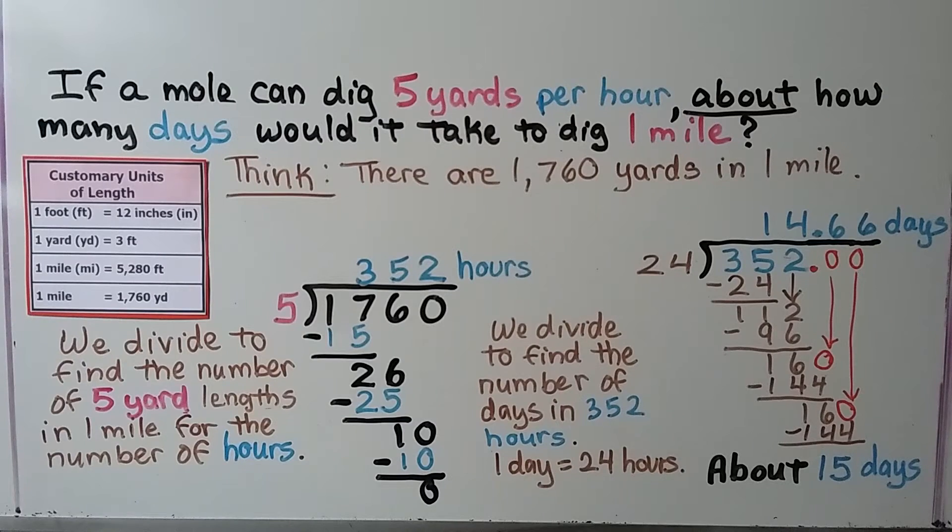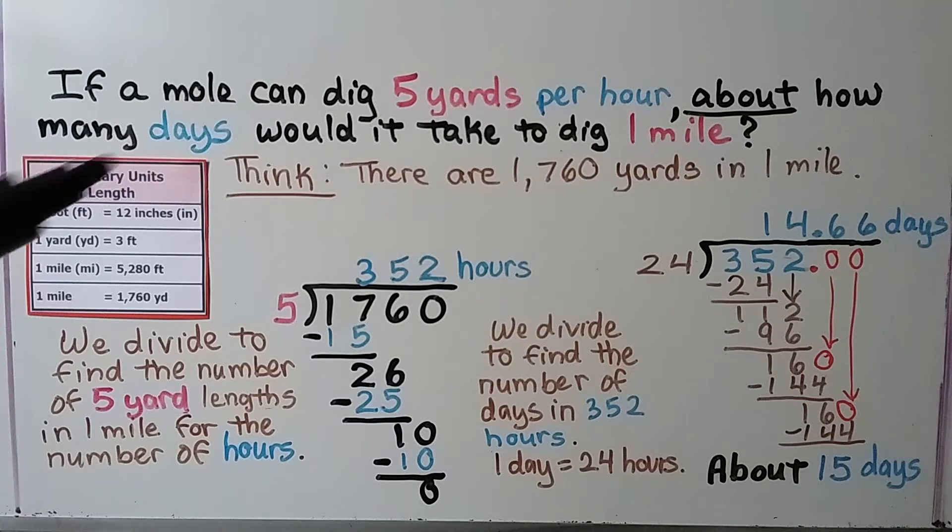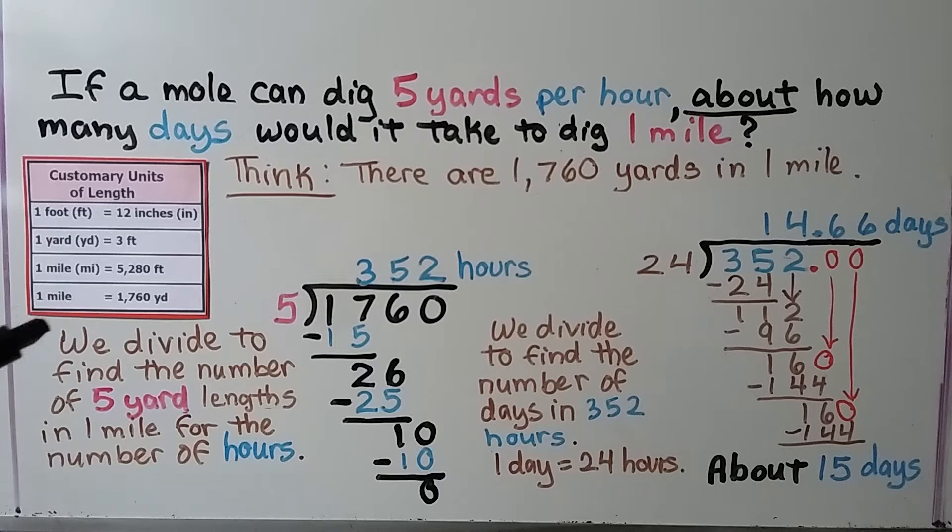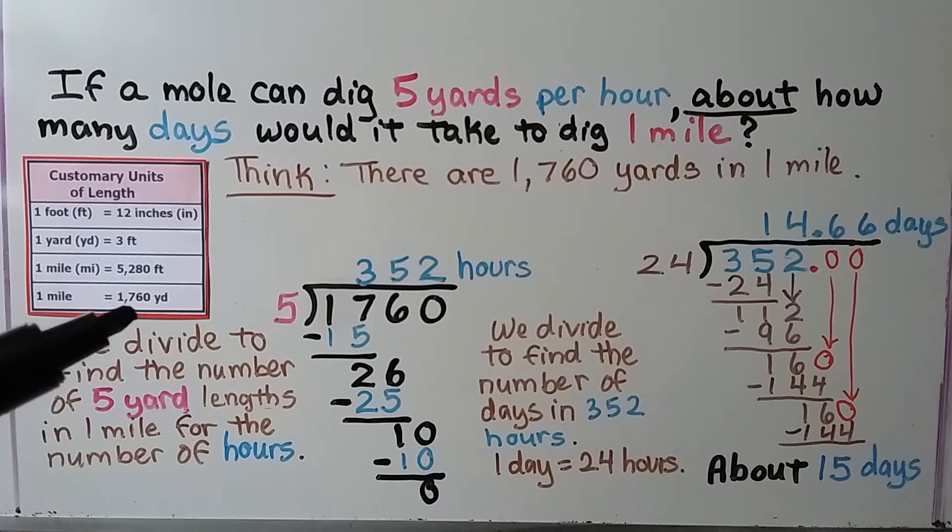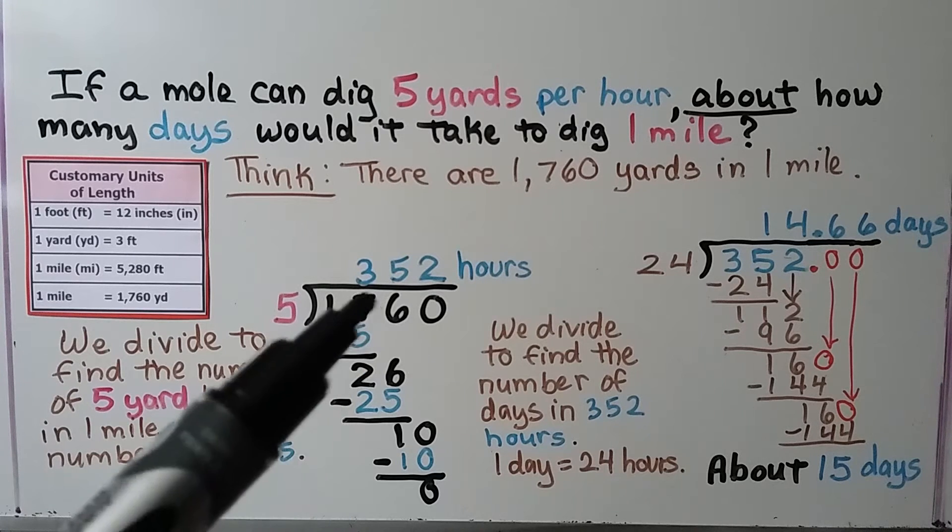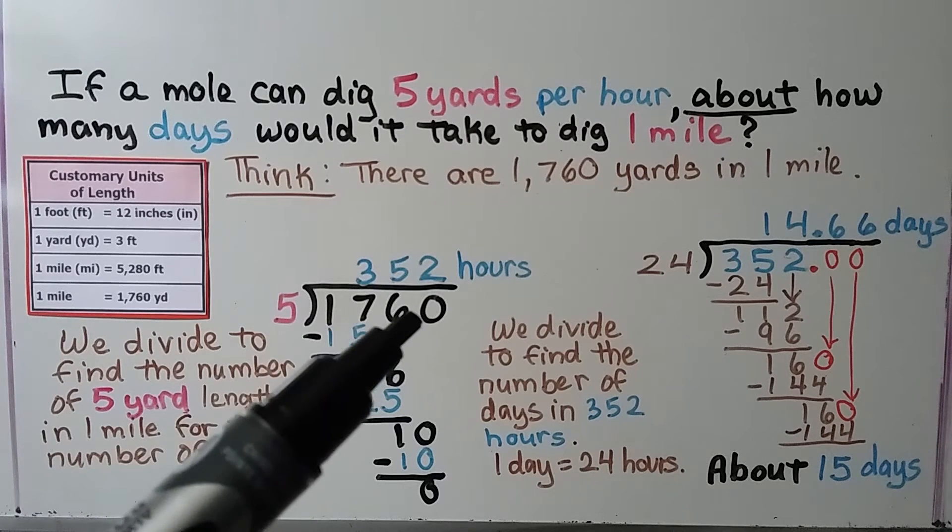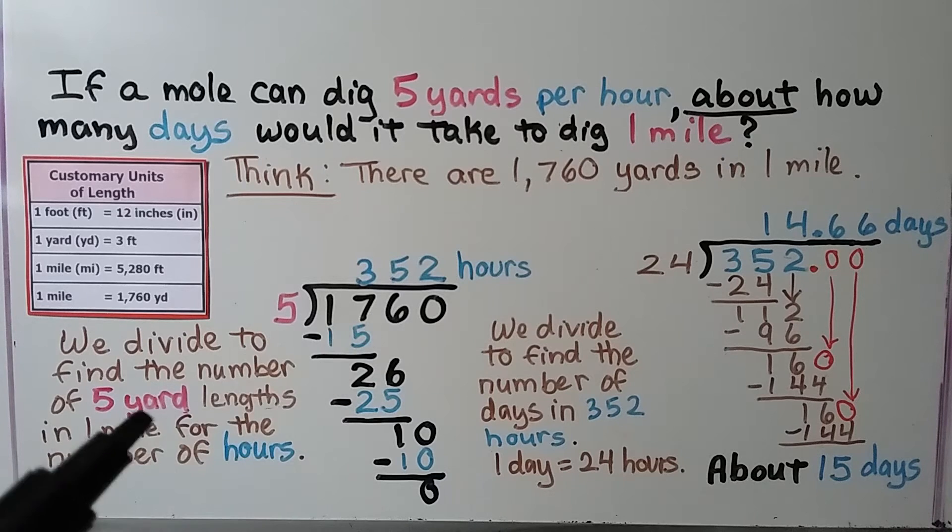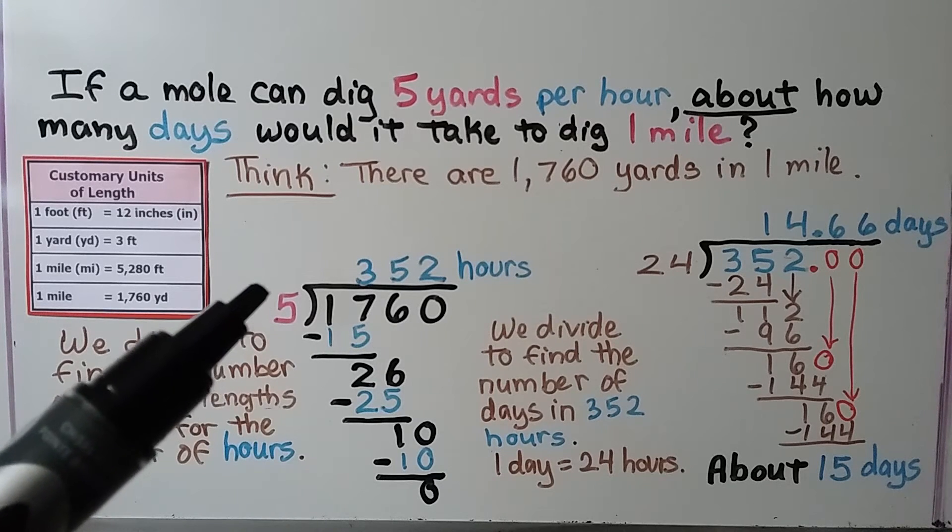If a mole can dig five yards per hour, about how many days would it take to dig one mile? We think. We're talking about yards and miles. And one mile is 1,760 yards. We divide to find the number of five yard lengths in one mile for the number of hours. We have 1,760 yards for a mile. And each five yards is one hour.